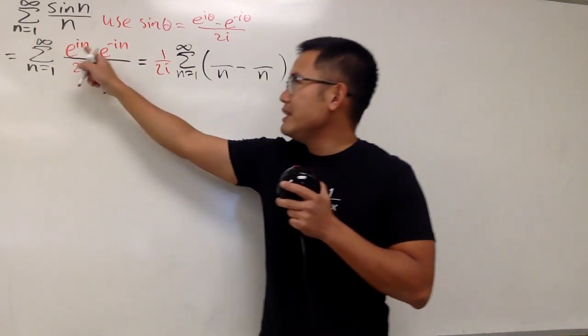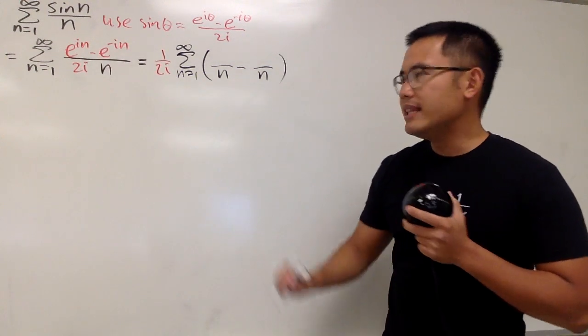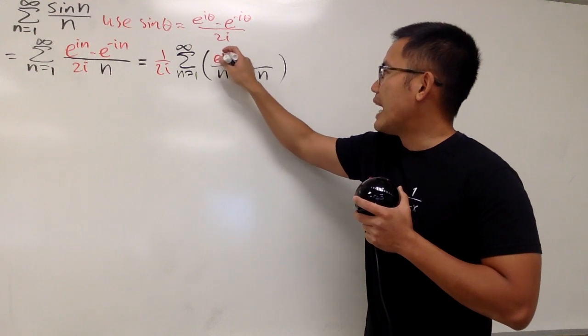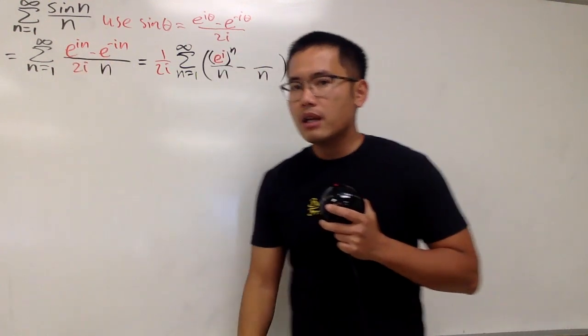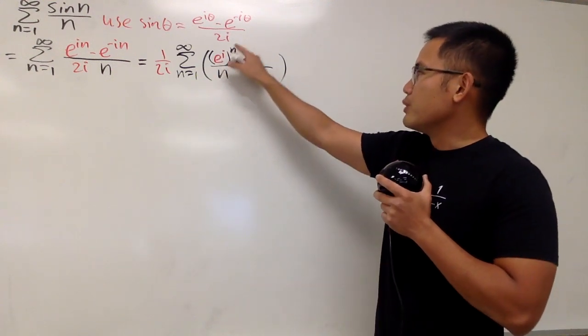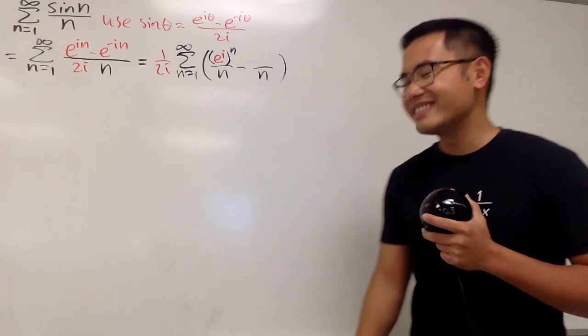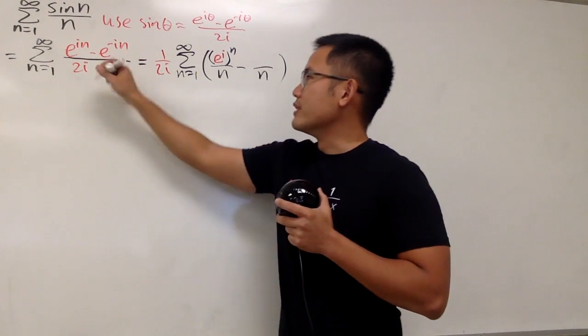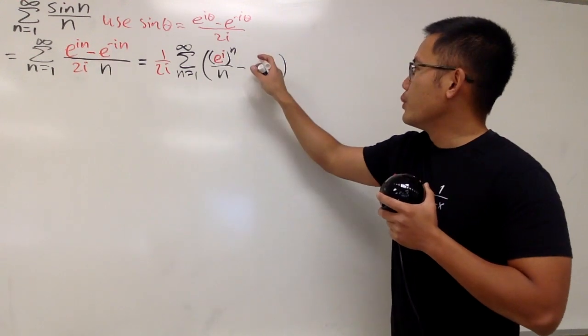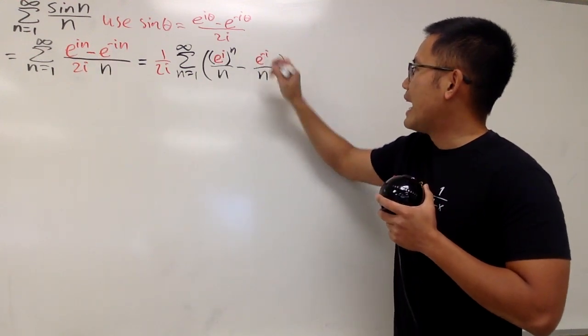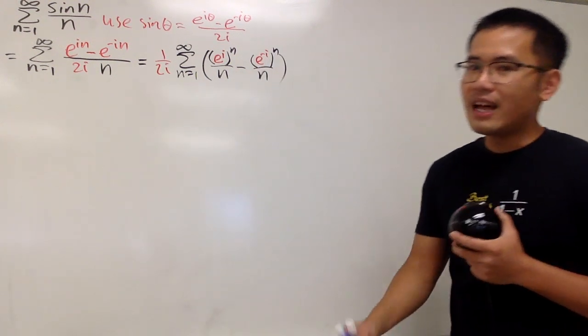Well, I'm about to put this right here. But notice, we have e to the i n. It has that n. Let me write it like this. e to the i and then raised to the n's power. Of course, this is the same as that. And the reason for me to do that is because when we have something to the n over n, we have a really nice power series that we can use. And, of course, we will do the same right here. And, by the way, this is the minus. So, for this one, we'll just put e to the negative i and then raised to the n's power. Very, very nice.